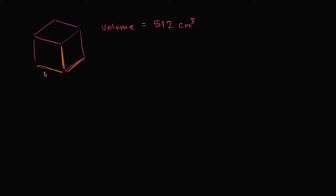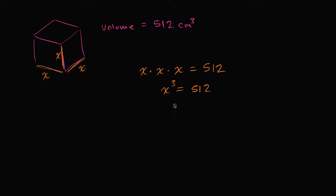Let's call this length x. If that's x, then this is going to be x, and then this is x as well. So if the volume is 512 cubic centimeters, that means that x times x times x is going to be equal to 512. Or we could say that x to the third power is equal to 512. Or we could say that x is equal to the cube root of 512.